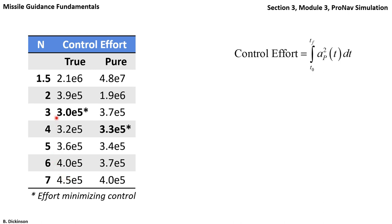So there is a control effort minimizing value of N for true ProNav. And the same trend occurs for pure, but the minimum is at N equals 4.